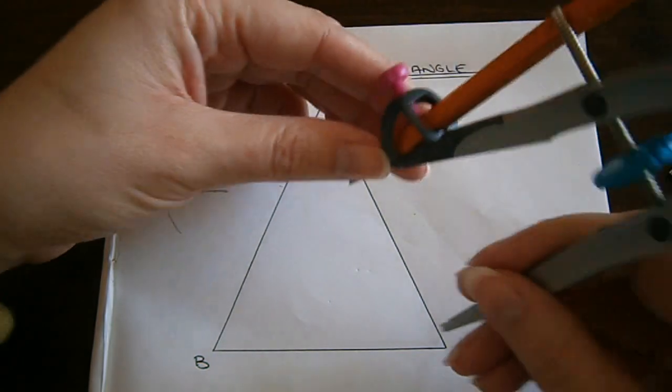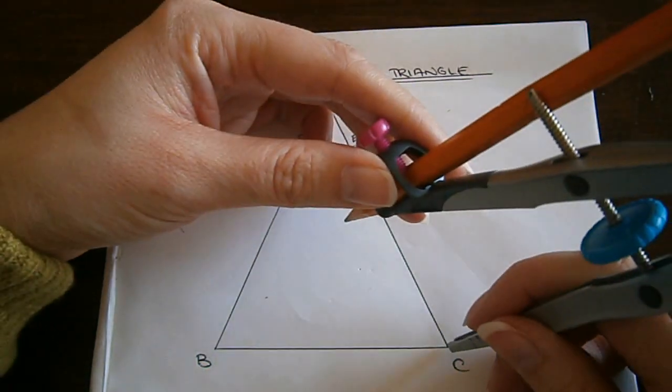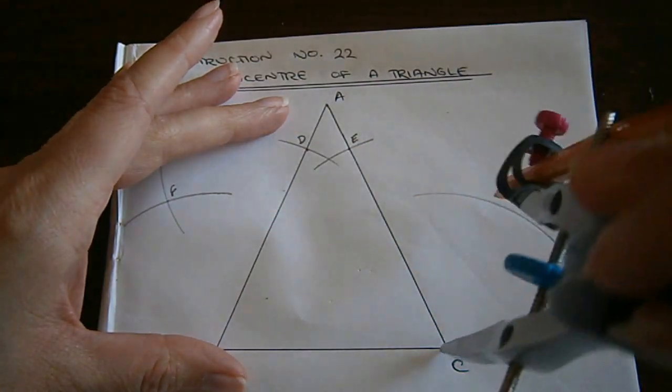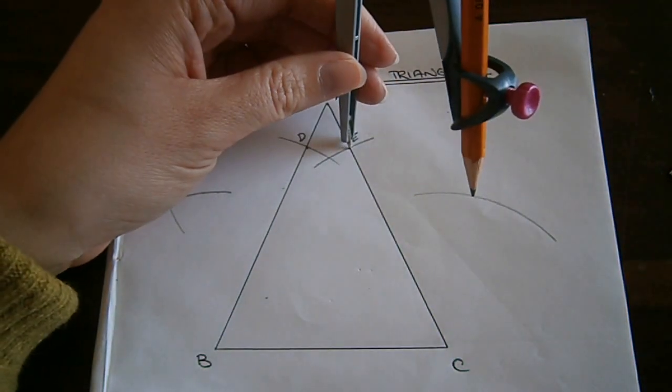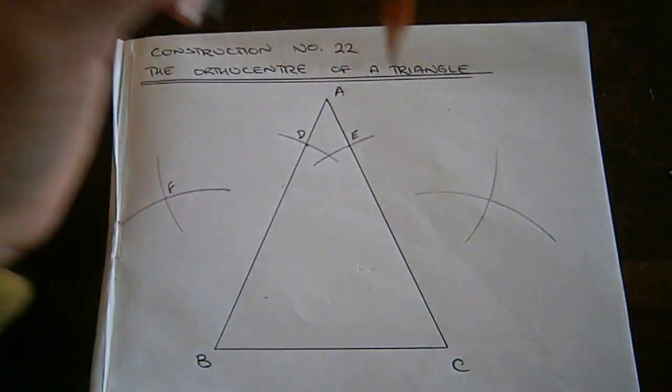I do the same between E and C. I put my compass point on C and draw an arc outside my triangle. I put my compass point on E and draw another arc outside my triangle.